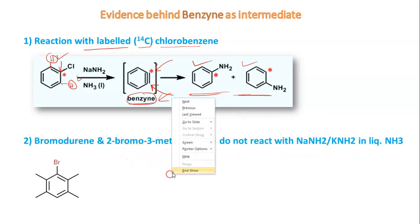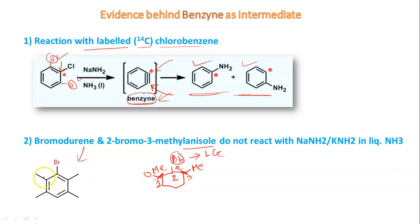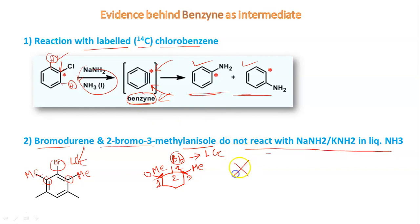The second evidence involves bromodurene and 2-bromo-3-methylanisole. In bromodurene, both ortho positions relative to the leaving group are blocked (no ortho hydrogens). Similarly in 2-bromo-3-methylanisole, both ortho positions relative to the leaving group are occupied by methyl groups. When these two molecules are treated under the standard benzyne-forming conditions (KNH2/NH3), no reaction is observed. This supports the benzyne mechanism: to form a benzyne intermediate an ortho hydrogen is required; without it, benzyne cannot form.